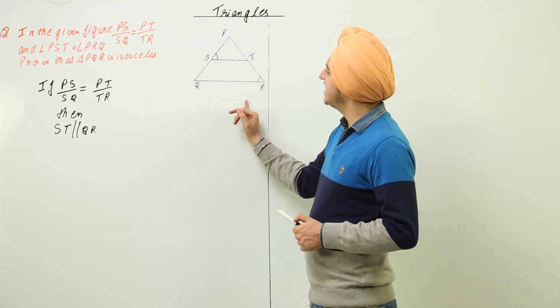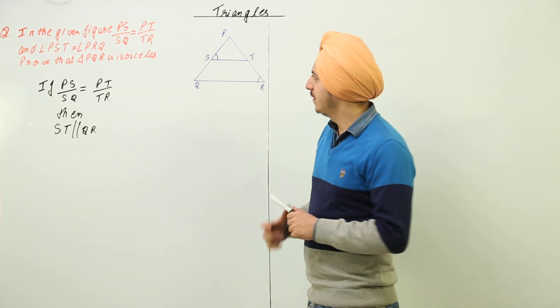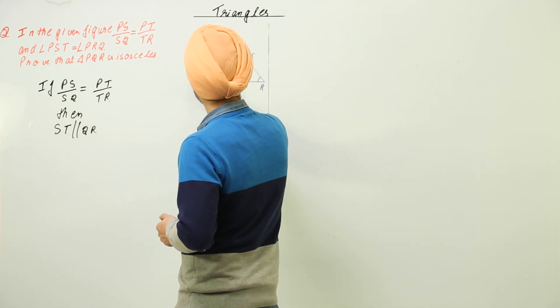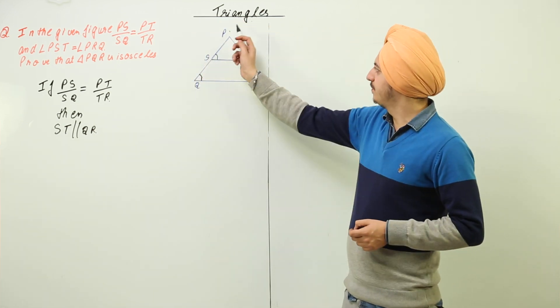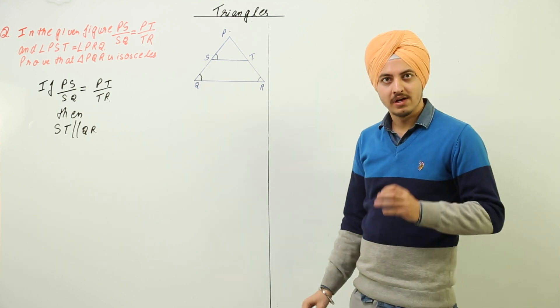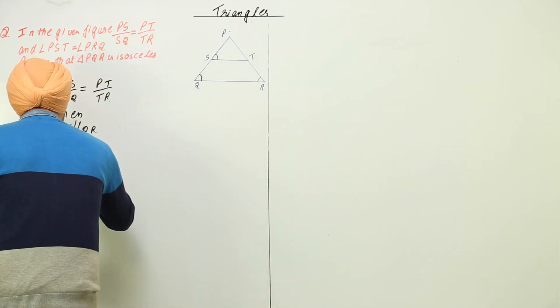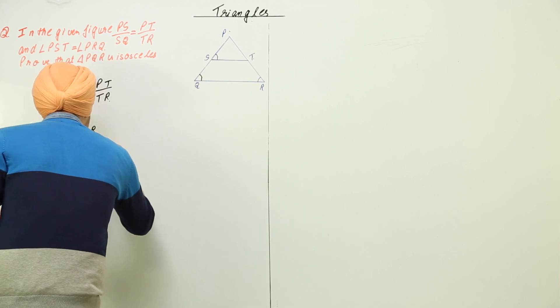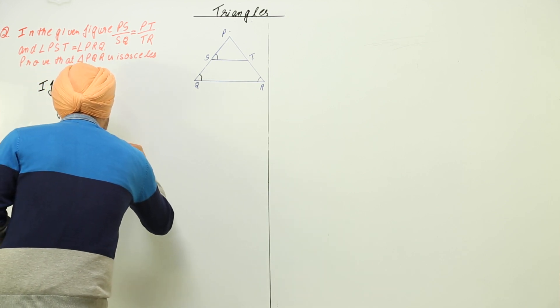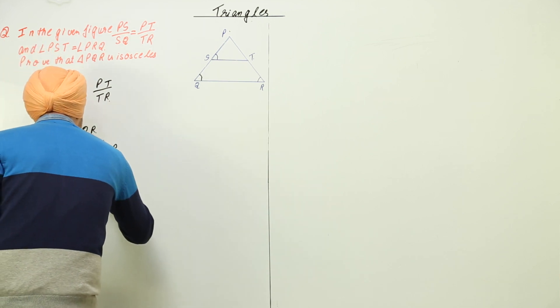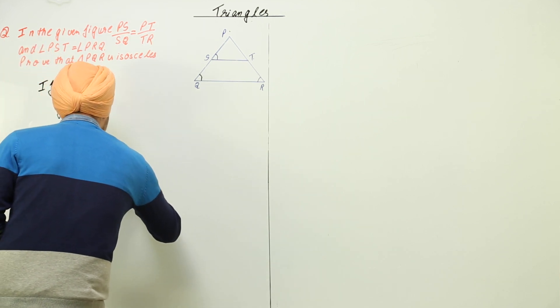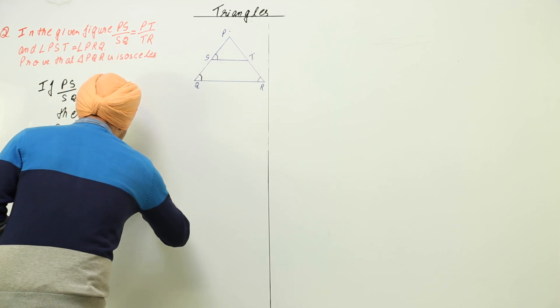Now if ST is parallel to QR, tell me one thing: what is the relation between angle PST and angle PQR? They are equal. If ST is parallel to QR, then angle PST is equal to angle PQR.